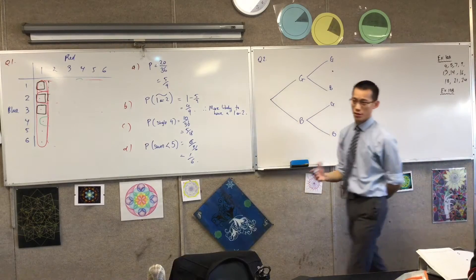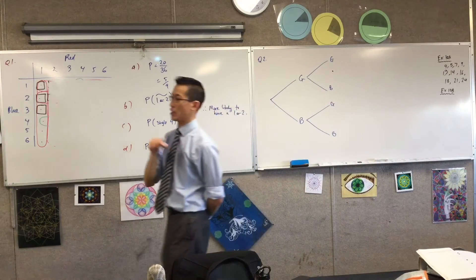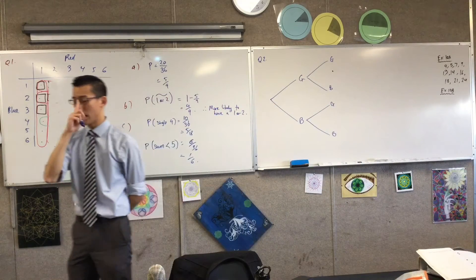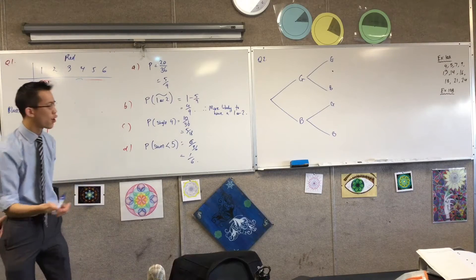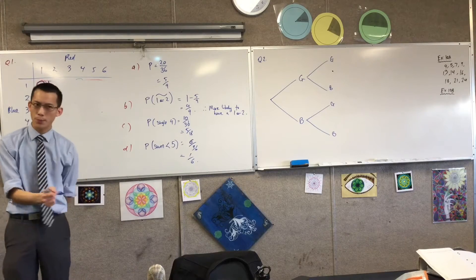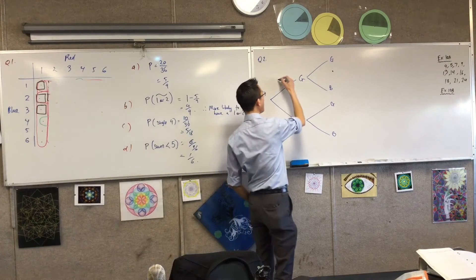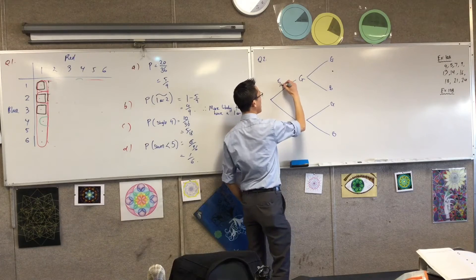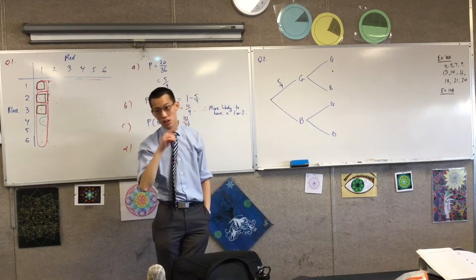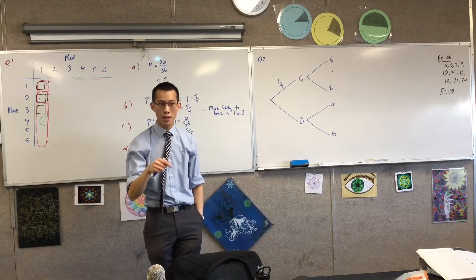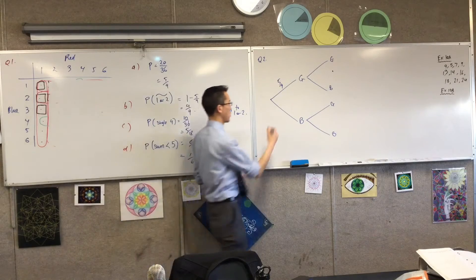The tricky part of a probability tree diagram is to make sure you get the probabilities on each of the branches correct. What's the probability of picking a girl the first time? Five over nine — five out of the nine. And because I've only got two outcomes each time, the other one is just the complement, so it's four over nine.